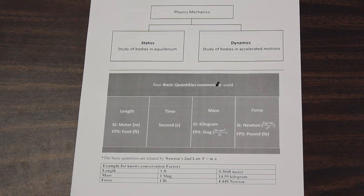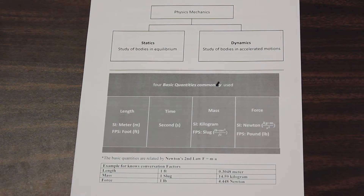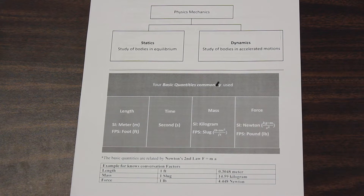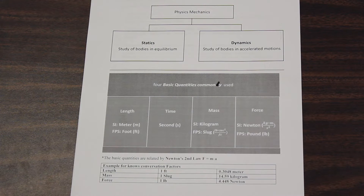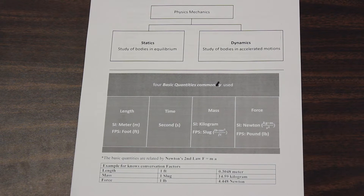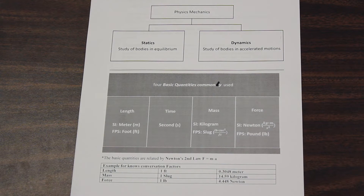The basic quantities are related by Newton's second law: force equals mass times acceleration. We also have a few conversion factors here — converting feet to meters, slugs to kilograms, pounds to newtons. Generally your professor will give these to you on the exam. If not, just ask them which ones you'll need to memorize. They don't expect you to memorize whole tables of conversions.